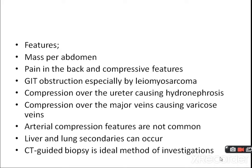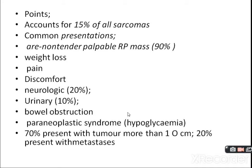Out of total sarcomas, 15% contribute to retroperitoneal sarcoma. Common presentations include a non-tender palpable retroperitoneal mass in the majority of cases, along with weight loss, pain, discomfort, neurologic manifestation, urinary manifestation, bowel obstruction, and paraneoplastic syndrome — usually hypoglycemia. In 70% of cases, the tumor is more than 10 cm, and in 20% of cases there is metastasis at presentation.